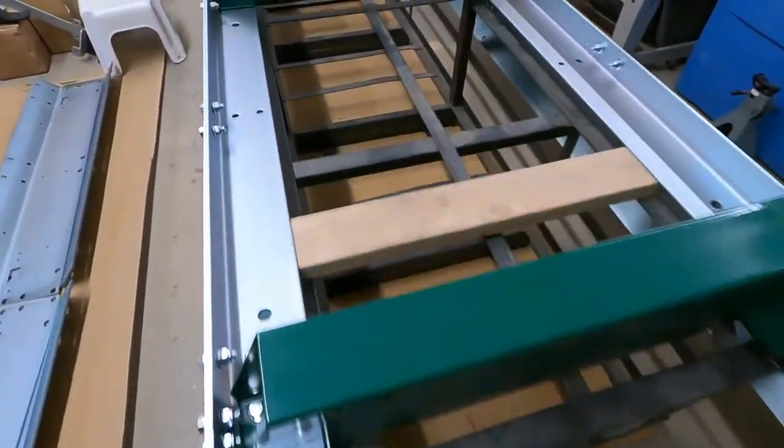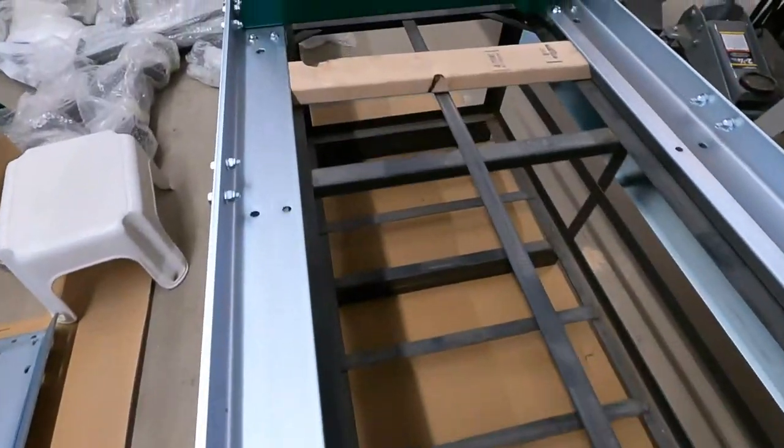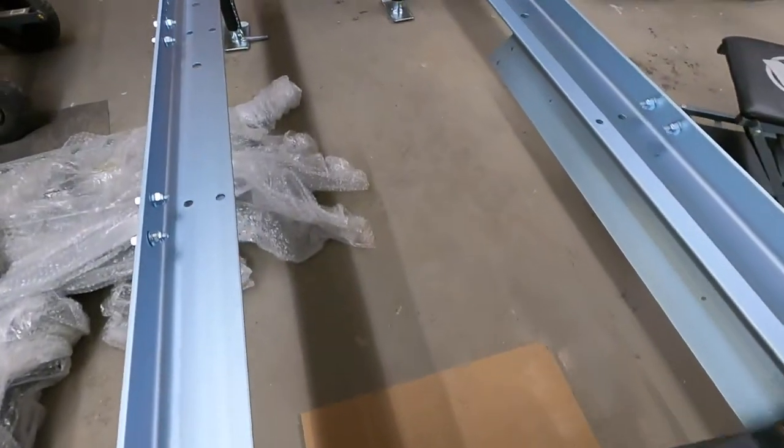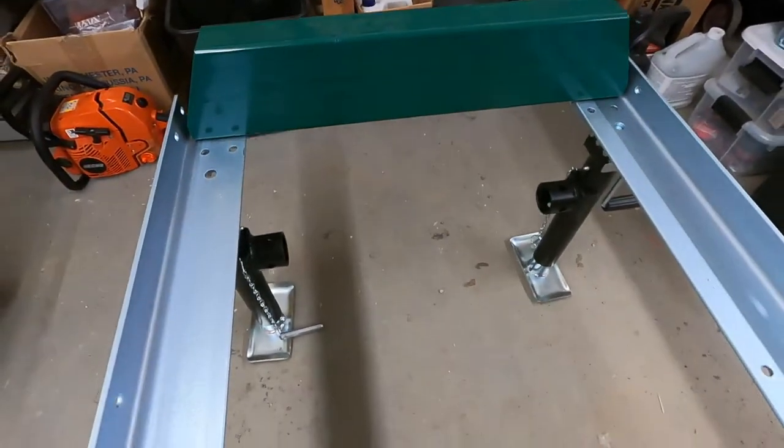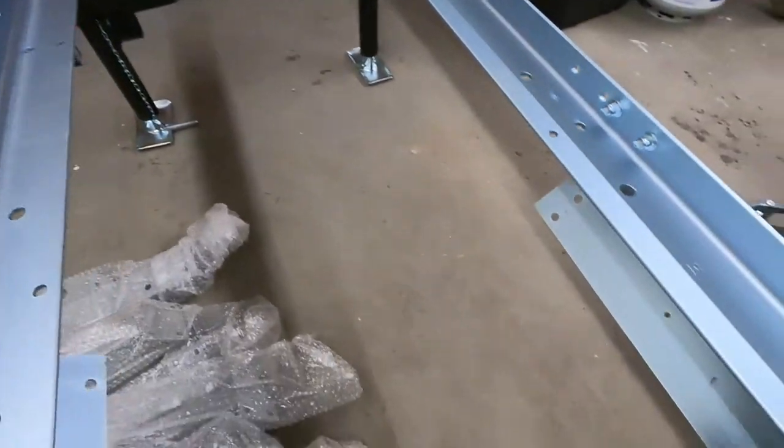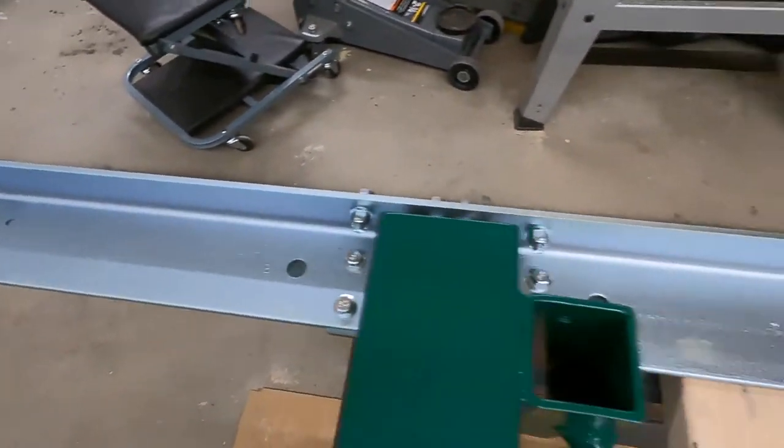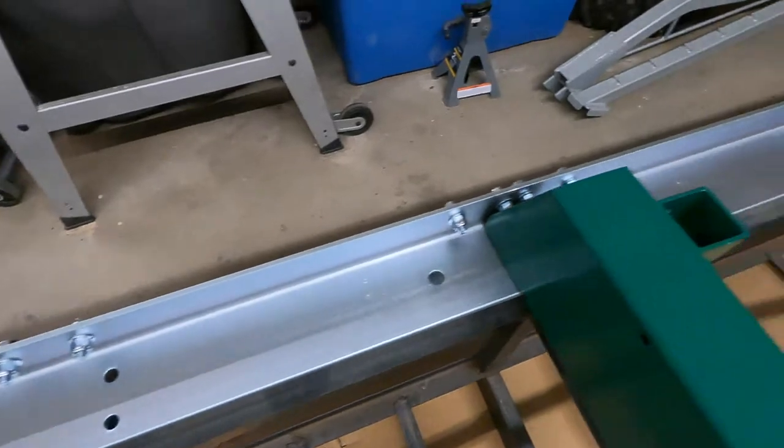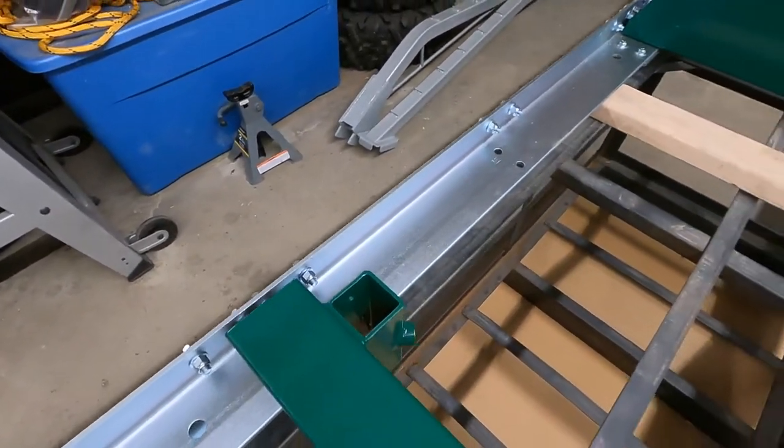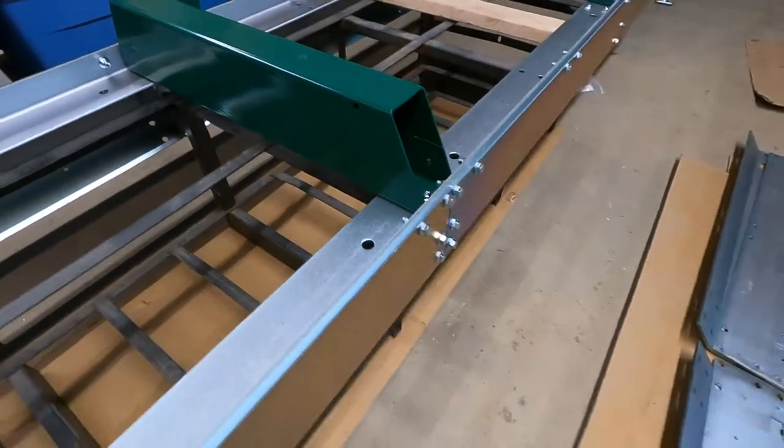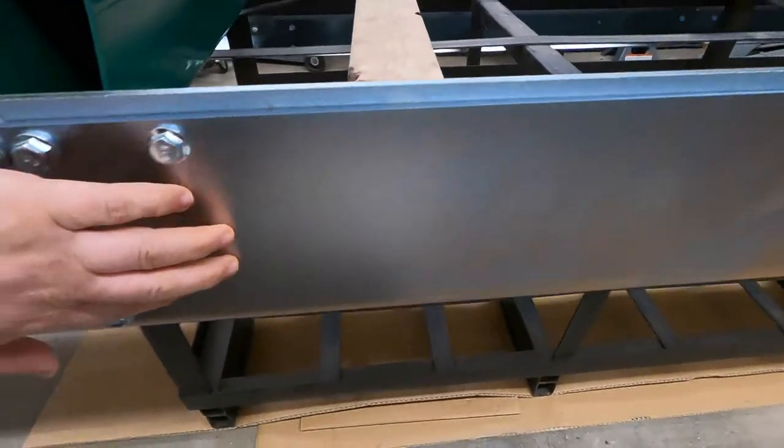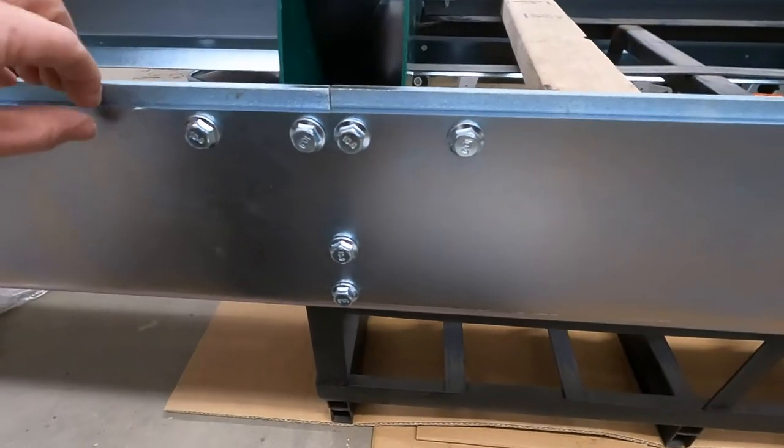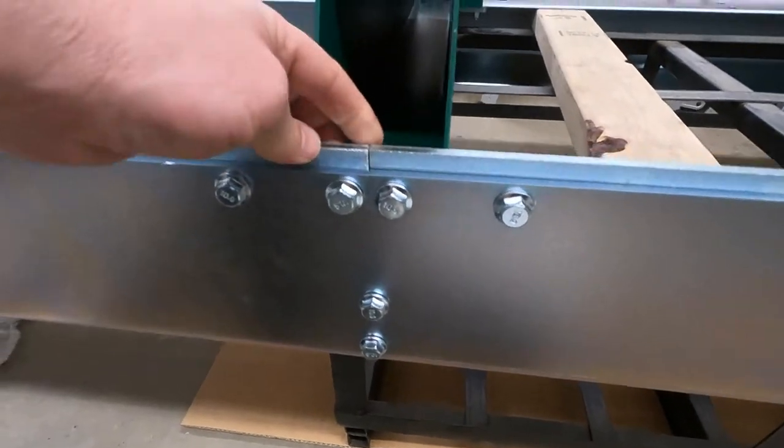So here we have the full length of the track assembled with the bunks on it, and one side rail over here is torqued to spec. Tonight's project is to get the side rail here on this side finally aligned and torqued to spec.